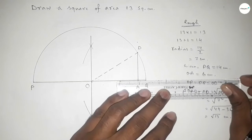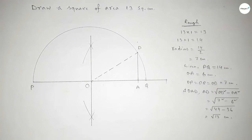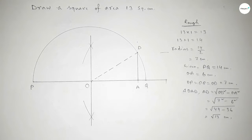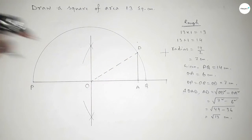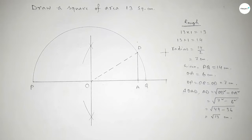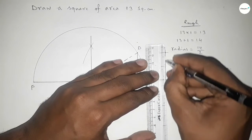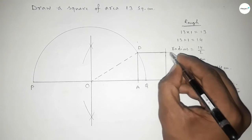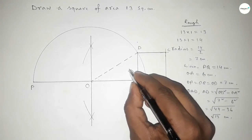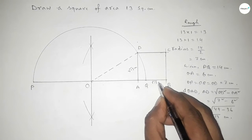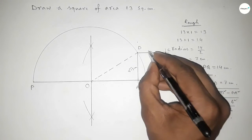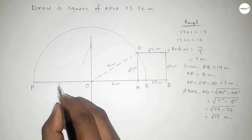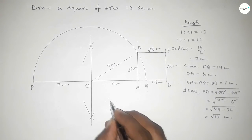Taking the length AD = √13 centimeters, extend the line PQ and draw arcs with the same length. Both curves intersect at a point. Joining the sides gives us points B and C. Each side of the figure measures √13 centimeters, with OA = 6 cm and OD = 7 cm confirmed.